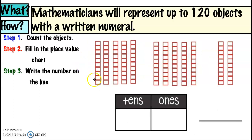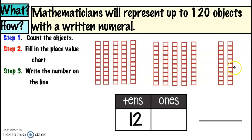I believe we have more. Here we go. Let's count the objects, fill in the place value chart, and write the number. How many groups of tens do we see? We have five, five, and two more, so we have twelve. And how many ones do we see? Zero ones. Twelve tens and zero ones gives us one hundred and twenty.